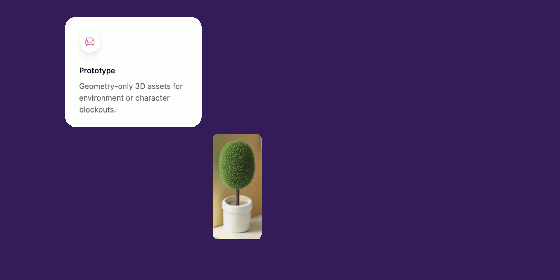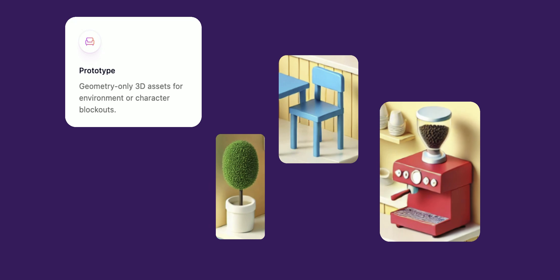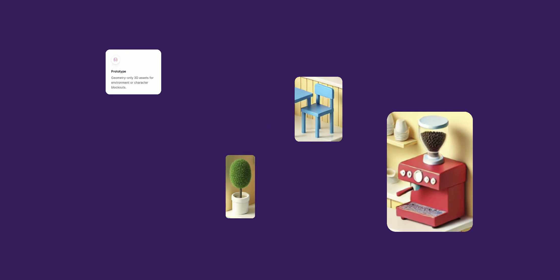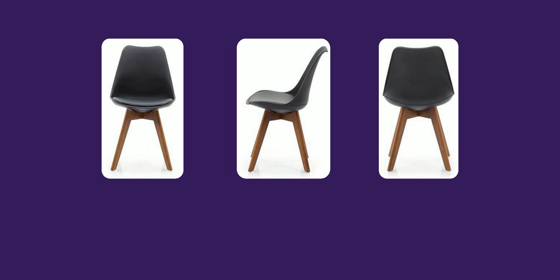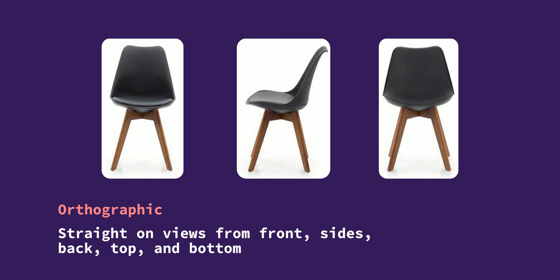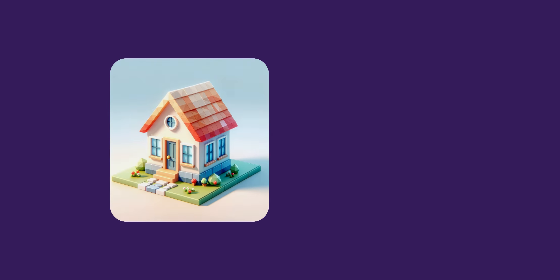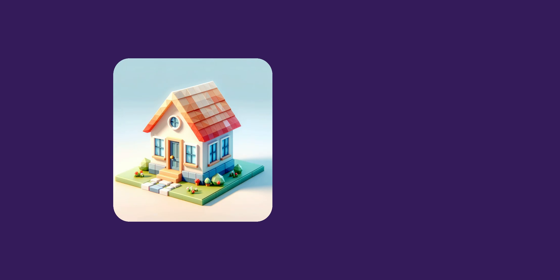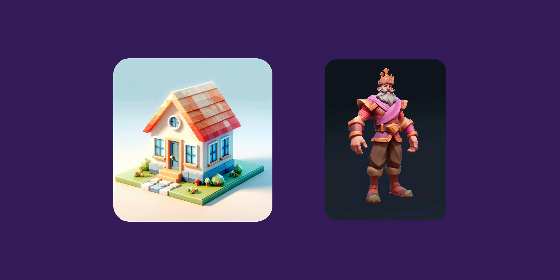If you're using prototype, we recommend separating the objects in your image first before uploading them as separate generations. If you're uploading multiple images, they must all be of the same object from different angles. We highly recommend having orthographic views of your object or character. If you don't have multiple views, we suggest a three-quarter view of your object or character to ensure the best possible result.